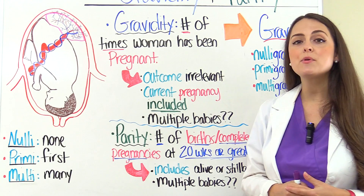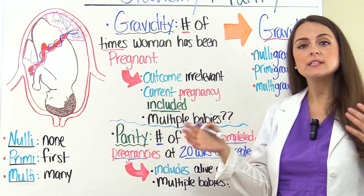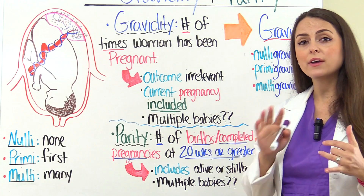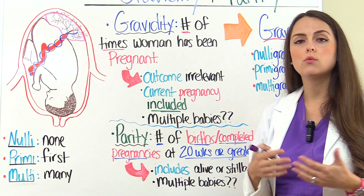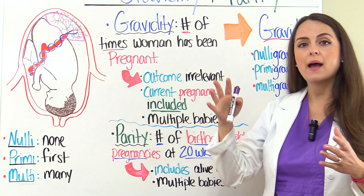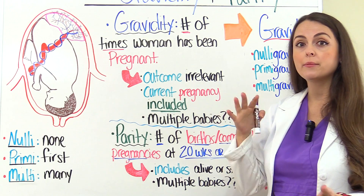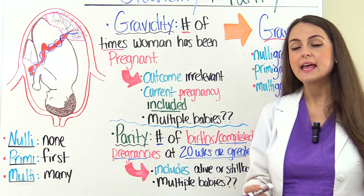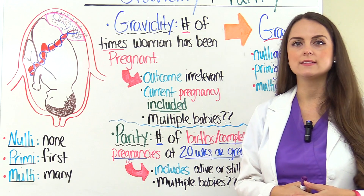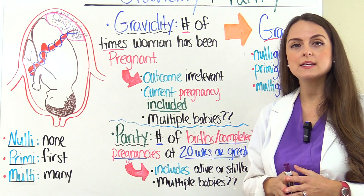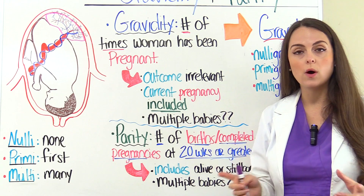First, Gravidity. This is the number of times a woman has been pregnant. When you are calculating the Gravidity, you want to take some things into account. Number one, the outcome of that pregnancy isn't really relevant — it doesn't matter if the baby survived or she lost the baby. We care about how many times she has been pregnant. This is going to include her current pregnancy. And if she is having twins, that would just count as one. Multiple babies counts as one when calculating Gravidity — we're not calculating the number of babies, it's just one pregnancy.